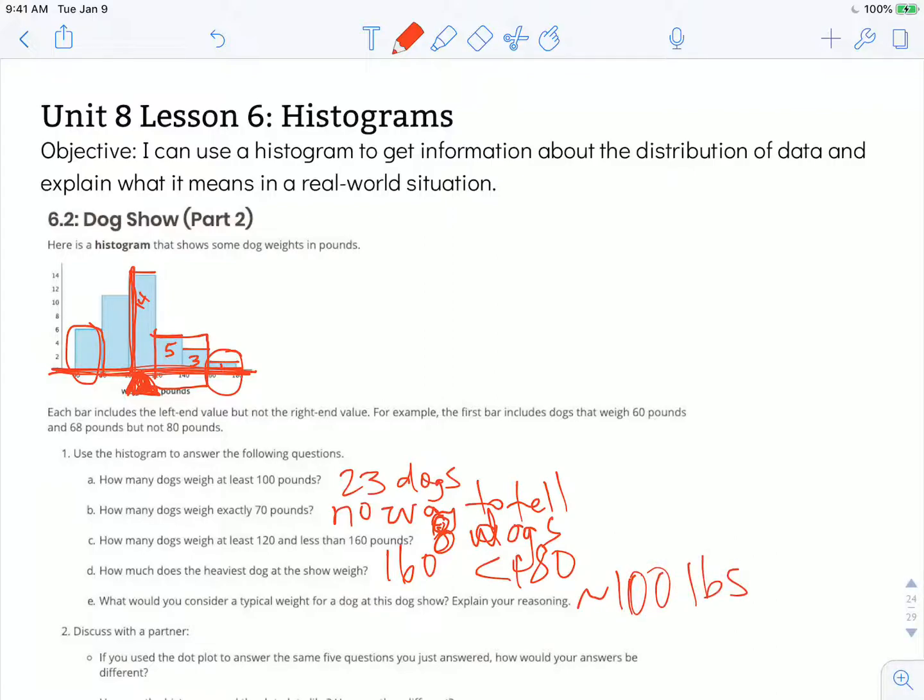If you used a dot plot instead of this histogram to answer these same five questions, how would your answers be different? Remember with a dot plot, we're plotting specific values. So we might know how many dogs weigh exactly 70 pounds when we have a dot plot, but we're going to end up having a different distribution of the data because we might have some gaps or some clusters. So it might take up more space overall to use a dot plot, but we could have more precision in our answers.